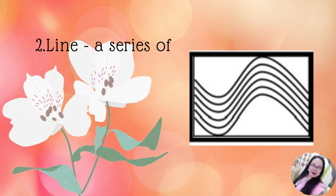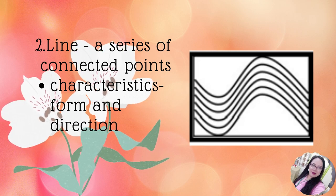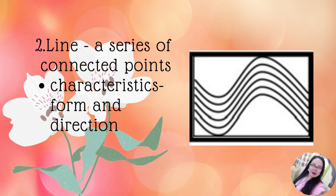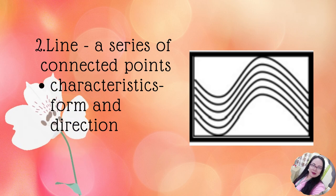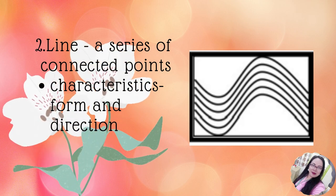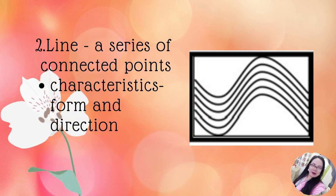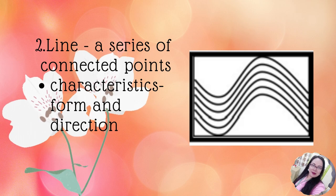Number two is line. In visual arts, a line is a series of connected points. It may come in two characteristics: form and direction. Curved, dotted, or broken lines are examples of form. While vertical, horizontal, and diagonal lines are examples of direction. Different types of lines may convey different meanings. For example, a horizontal line usually suggests calmness, vertical lines may convey strength, diagonal lines create an impression of action, curved lines create an expression of gradual change of direction, and circular lines may pertain to an abrupt change of direction.